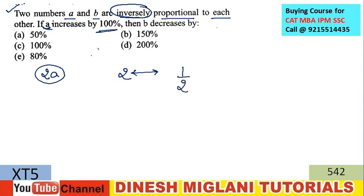If they were directly proportional, the percentage change would be the same. Since they are inversely proportional, if A is made twice, then B has to be made half — meaning B is decreased by 50 percent. So the answer is A. It's a basic question of direct and inverse proportion.